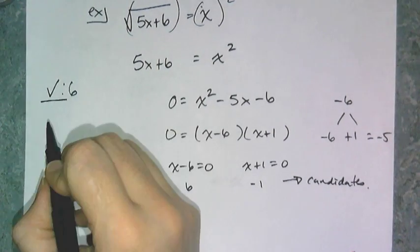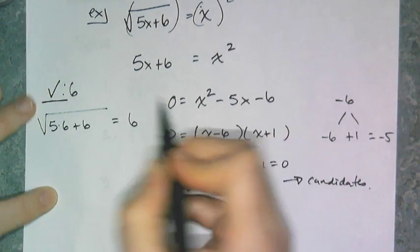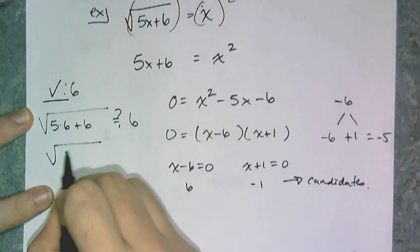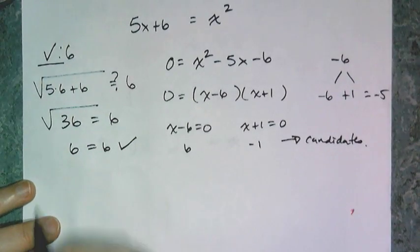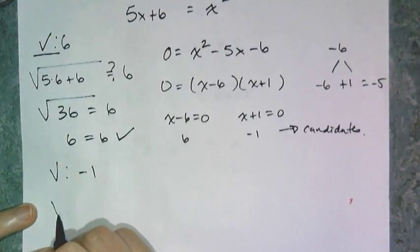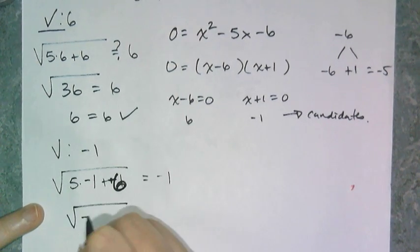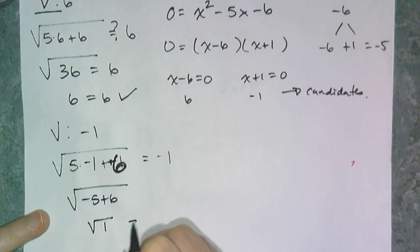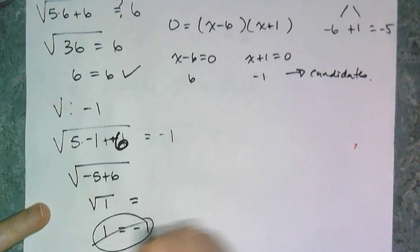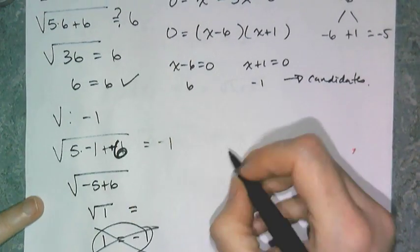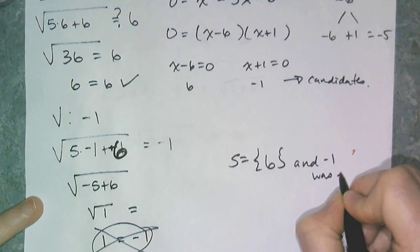I have two candidates to check. Checking x equals 6: the square root of 5 times 6 plus 6 — does that equal 6? I get the square root of 36 equals 6, and 6 equals 6. Now checking x equals negative 1: the square root of 5 times negative 1 plus 6 gives the square root of 1, which equals 1, not negative 1. That does not work. So my solution is the set containing 6, and negative 1 was extraneous.